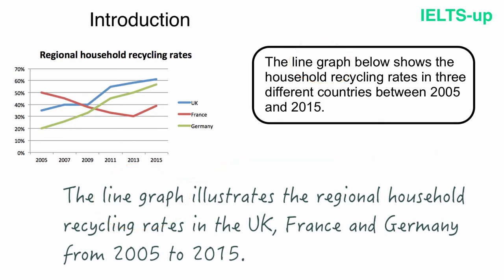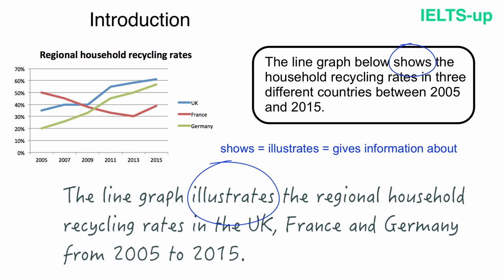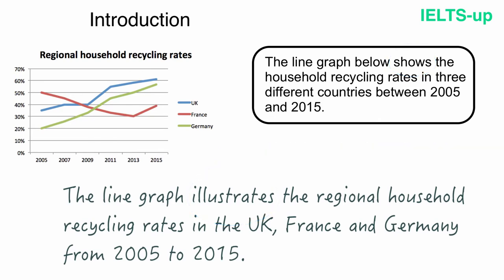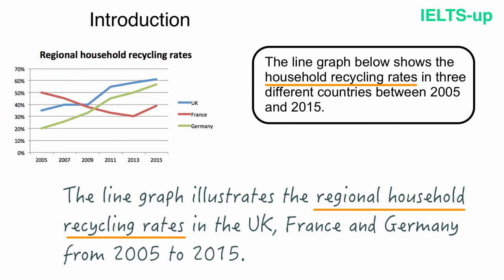The verb can always be replaced with a synonym — it's a very good idea to paraphrase it. Instead of 'shows,' you can use 'illustrates' or 'gives information about.' I expanded 'household recycling rates' into 'regional household recycling rates' based on the graph, including all key information from both the graph and the topic in the introduction.